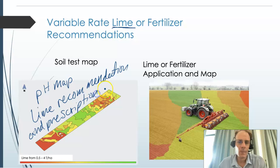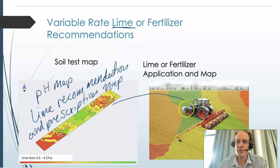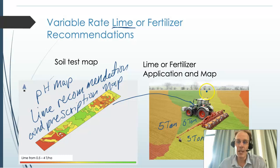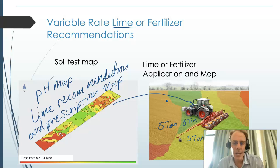We take that prescription map and load it into the tractor's computer. As the tractor drives through the field, it changes the rate of lime being applied as it crosses from one zone to the next. For example, the yellow zones may need three tons of lime, the green areas need zero tons, and the orange areas may need five tons. The computer in the tractor reads the map and uses the GPS or GNSS location to change the rate of lime applied as the tractor moves through the field, allowing the correct amount to be applied in the correct location, reducing over or under application.